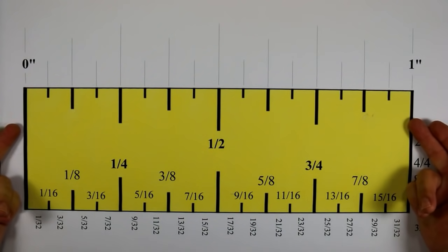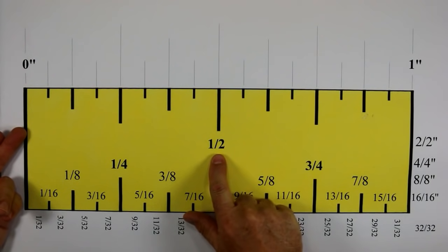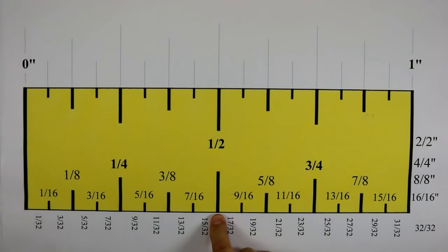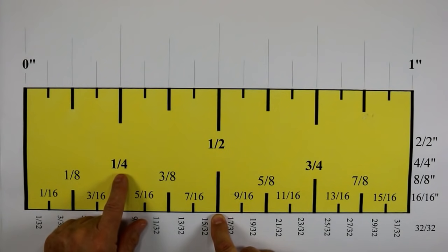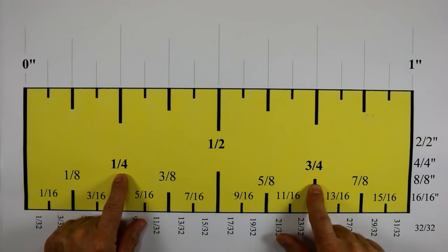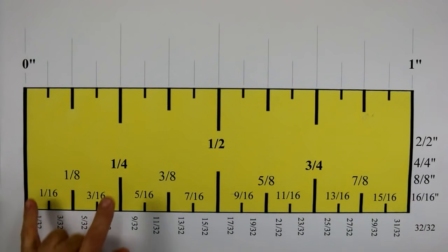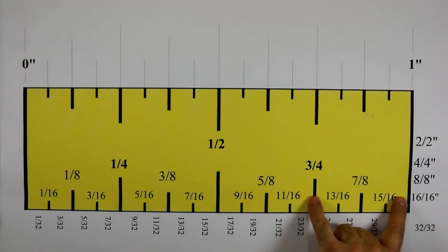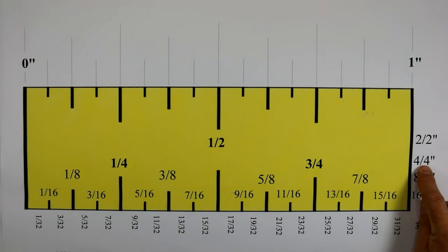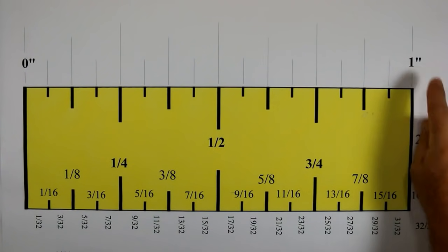From the inch we divide that in half and we have one half inch. So this hash mark right in the center is one half inch. Then we divide the half inch into two and that creates one quarter. So we do it on both sides, giving us a total of four quarters: one quarter, two quarters, three quarters, four quarters. Four quarters equals one inch.